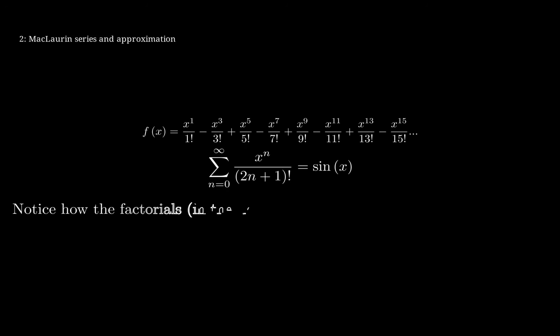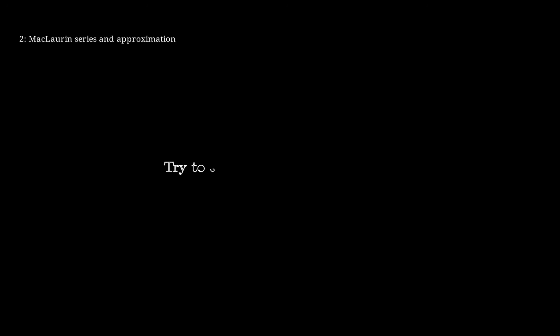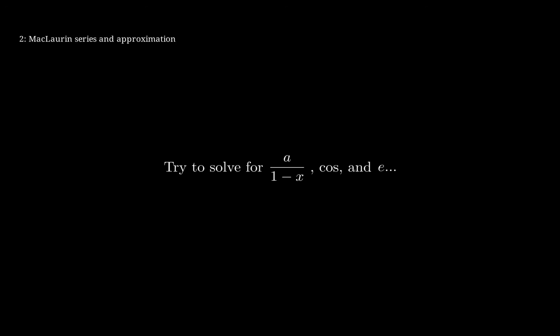So, the power and the factorial is 2n plus 1. We're also noticing that negative 1 to the power of n will give us that alternating plus and minus. Now, I want you to try to solve for the following equations.